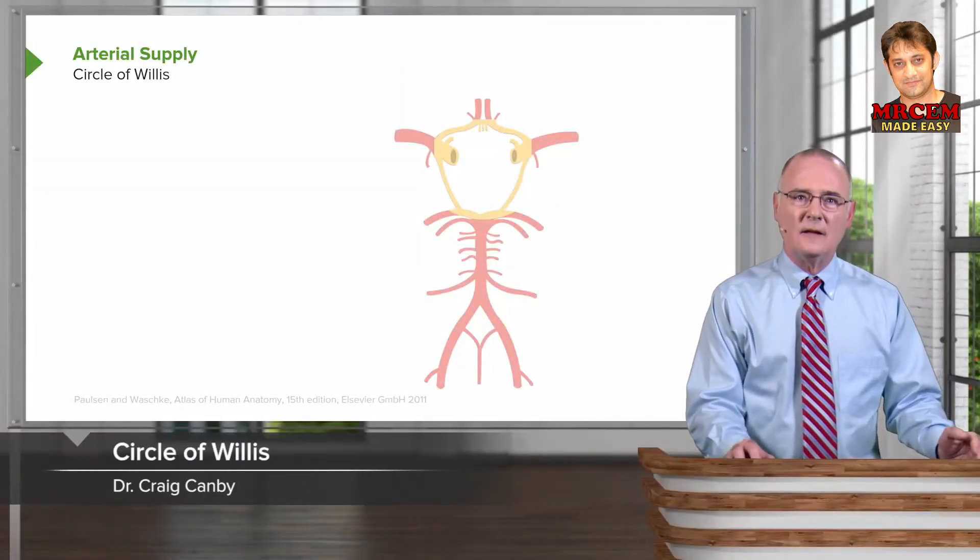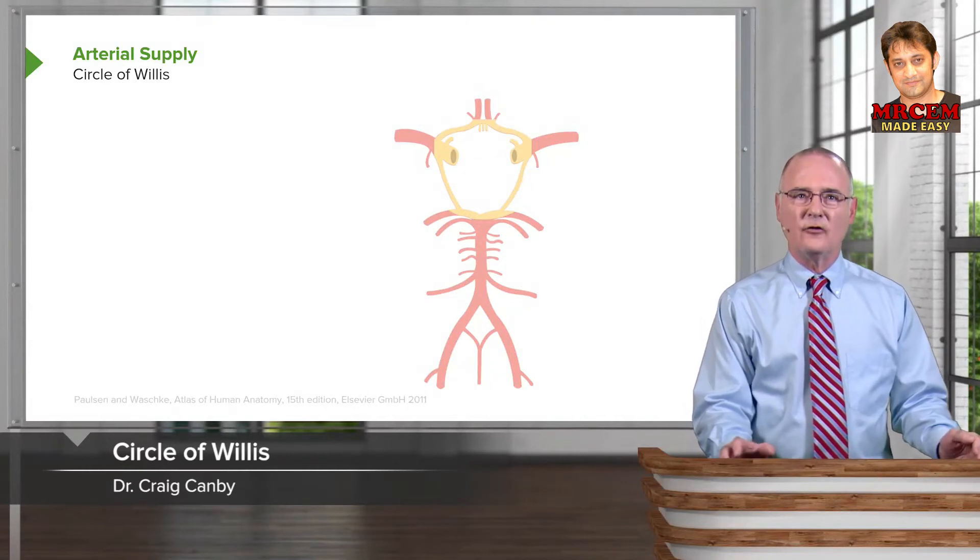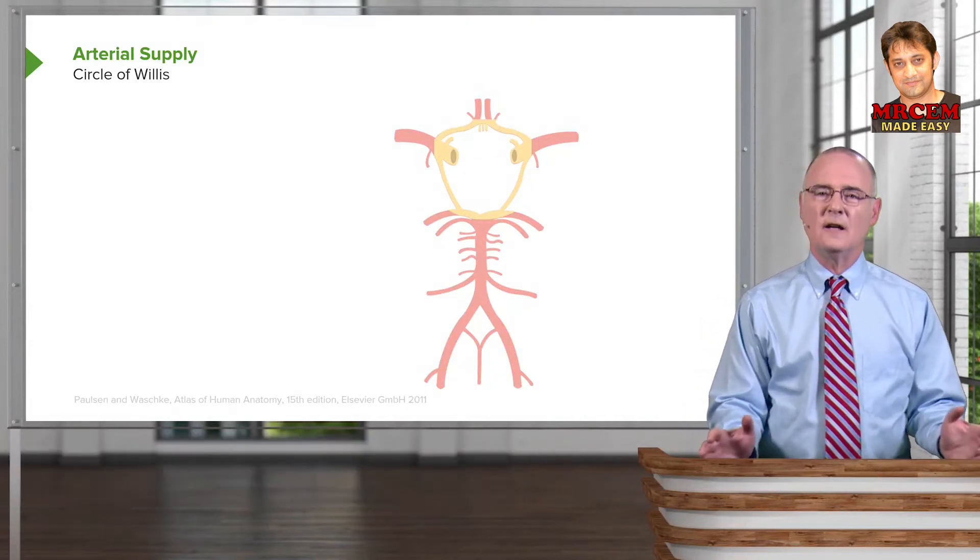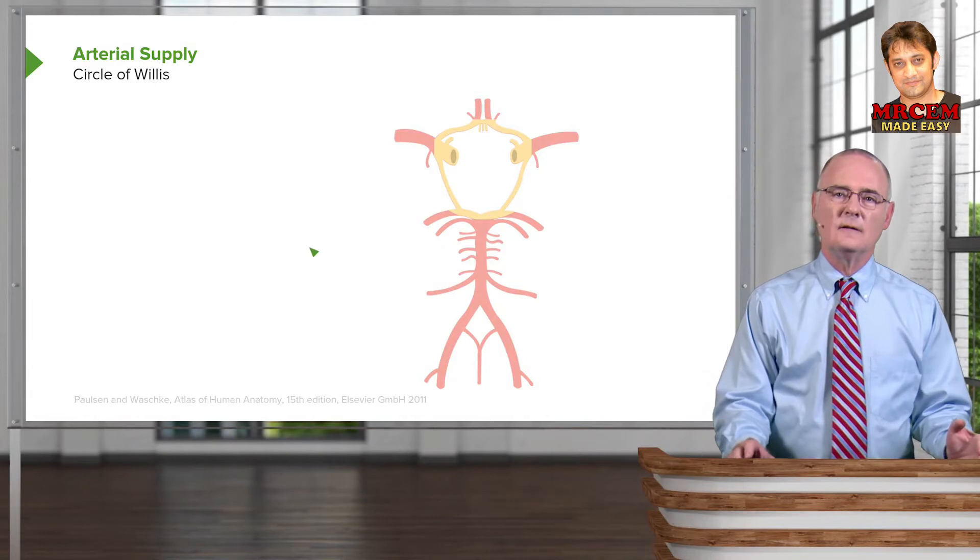Lastly, we're looking at the arterial supply to the Circle of Willis, not for detail. That will be covered in another lecture.